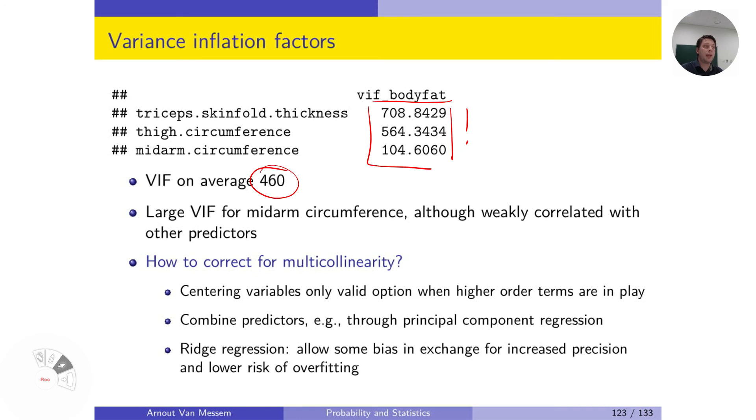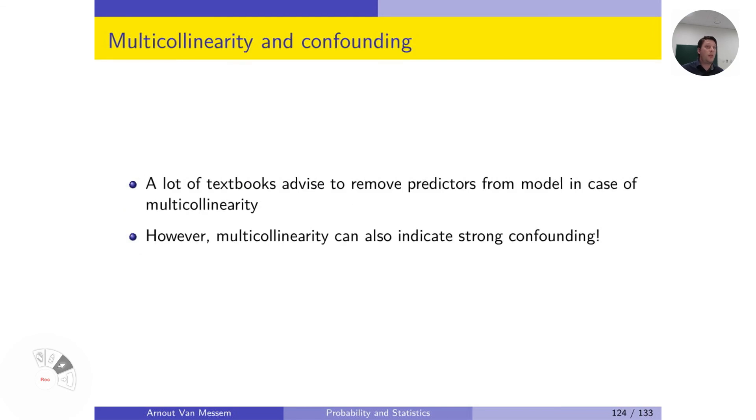So in this case, if we want to solve multicollinearity, we will have to rely on other methods and most likely other regression methods to get a good idea of the model.